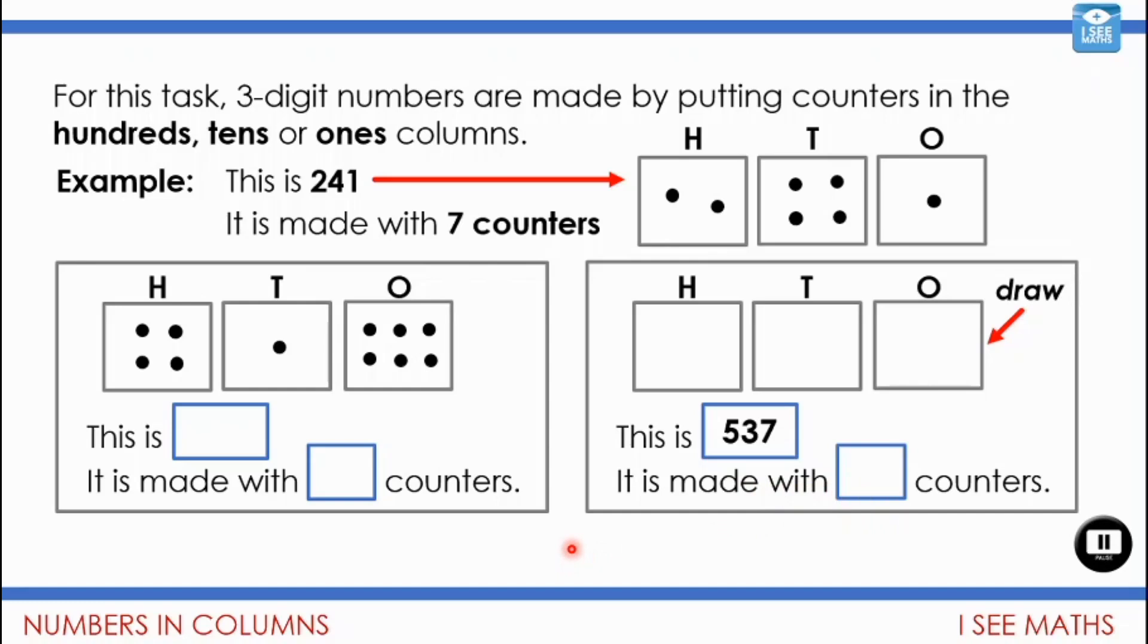And let's have a little look. So the left-hand example, well, it's 416. And how many counters? It's made with 11 counters. Six there, four there, and another one here. Now, what will 537 look like when shown in this way? Five hundreds, three tens, and seven ones. And that in total is 15 counters. I worked that out by doing the seven add the three, and then add the five. Five, 15 in total.